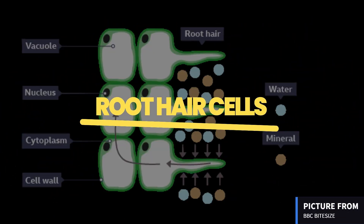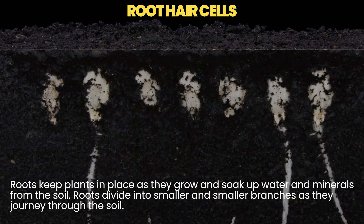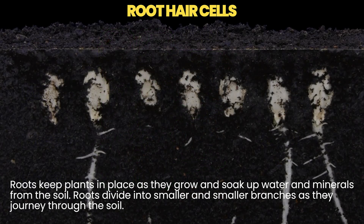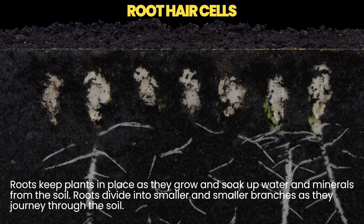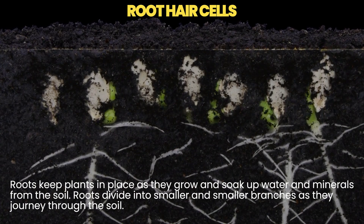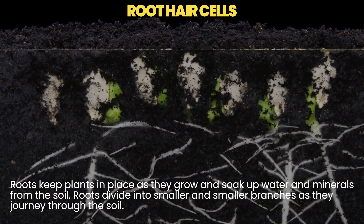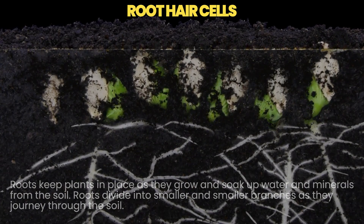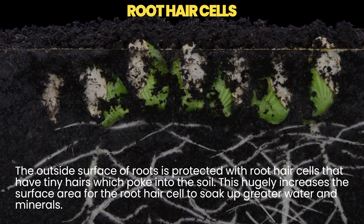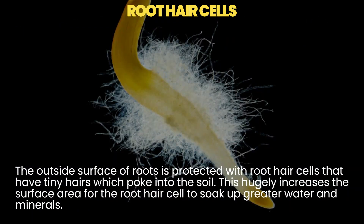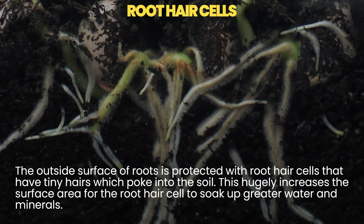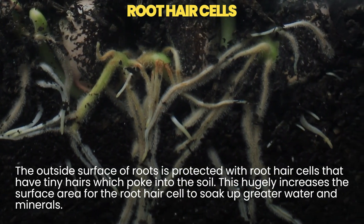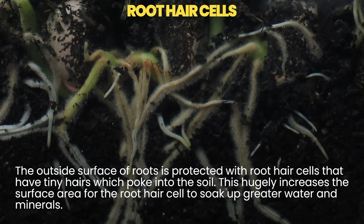Root hair cells: roots keep plants in place as they grow and soak up water and minerals from the soil. Roots divide into smaller and smaller branches as they journey through the soil. The outside surface of roots is protected with root hair cells that have tiny hairs which poke into the soil, hugely increasing the surface area to soak up greater amounts of water and minerals.